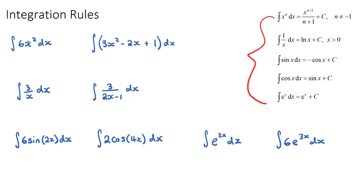For a basic polynomial, the rule is: we raise the power by 1, so the power of n becomes n plus 1, and we put that new power on the denominator. So this will be 6x cubed over 3, and then we put our plus c constant. We can simplify the 6 and the 3 to get 2, so the answer will just be 2x cubed plus c.